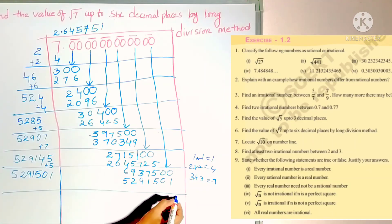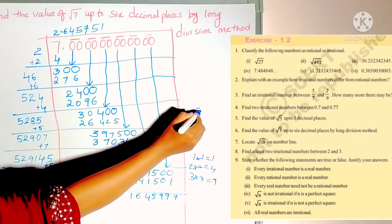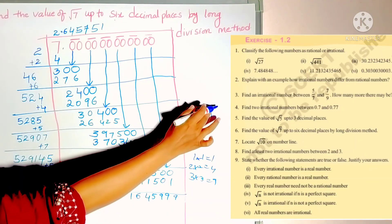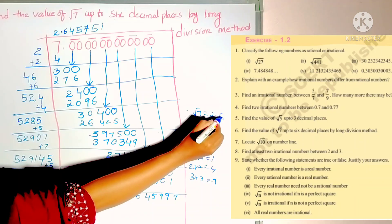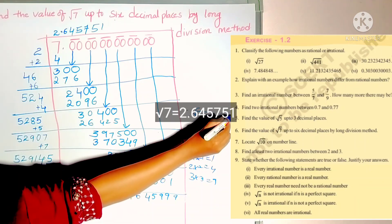Again 9. 14 minus 5 also 9. 6 minus 1 is 5. 13 minus 9 is 4. 8 minus 2 is 6. 6 minus 5 is 1. This will be the remainder. Because it is irrational number. It is non-terminating and non-recurring. So up to 6 decimals we calculated this. So finally we can write root 7 is equal to 2.645751.